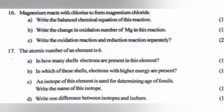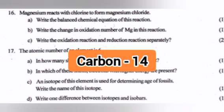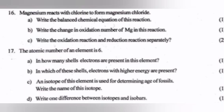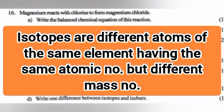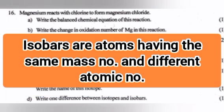C. An isotope of this element is used for determining age of fossils. Write the name of this isotope. Answer: Carbon-14. D. Write one difference between isotopes and isobars. Answer: Isotopes are different atoms of the same element having the same atomic number but different mass number. Isobars are atoms having the same mass number and different atomic number.